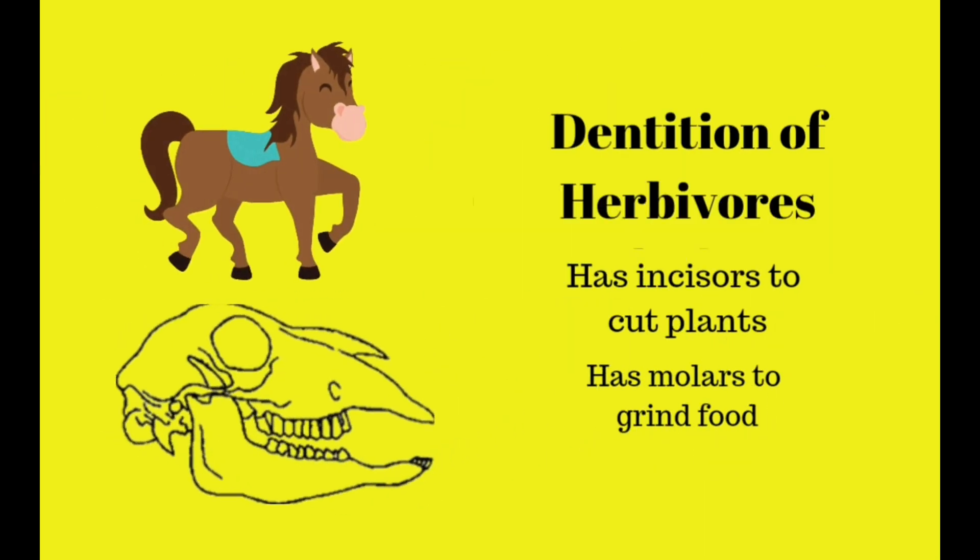Herbivores have incisors to cut plants and molars to grind food.